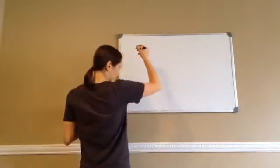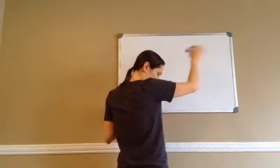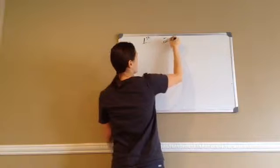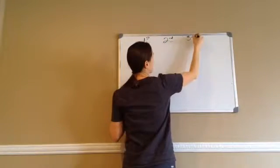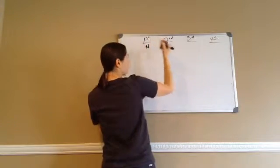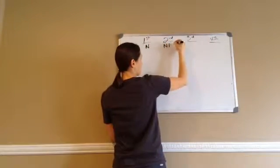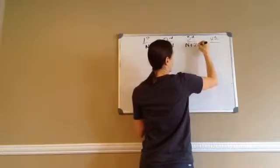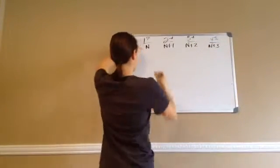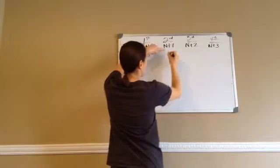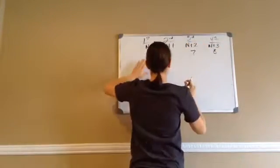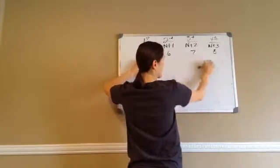So remember from the last lesson, when we were talking about consecutive integers, the first one was n, the second one was n plus 1, n plus 2, and then n plus 3. Because when you have consecutive integers, it would be like 5, 5 plus 1 is 6, 5 plus 2 is 7, 5 plus 3 is 8. Consecutive means 5, 6, 7, 8.